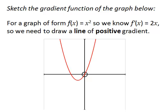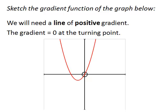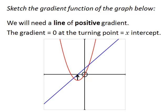We're going to need to draw a line of positive gradient. When the gradient of the original parabola is 0 at the turning point, there where it turns, that is the x-intercept of our gradient function. It's a line of positive slope, and it is 0 when the gradient of the original function is 0.